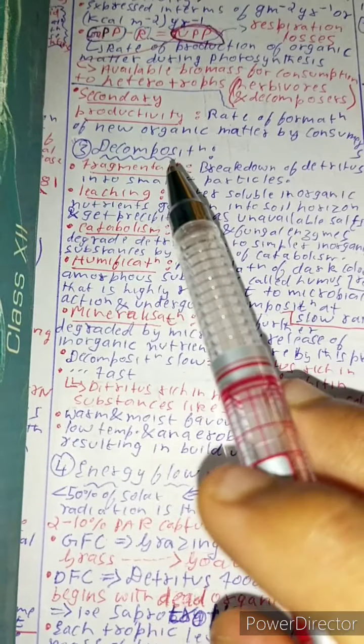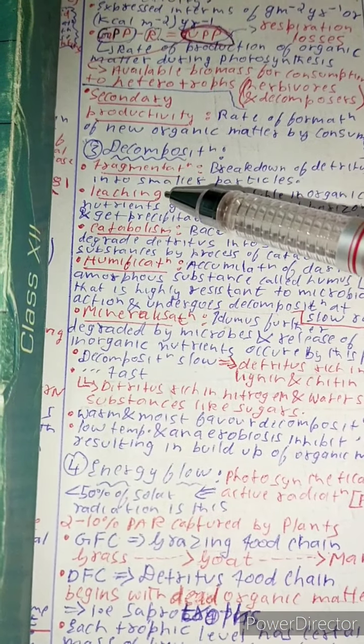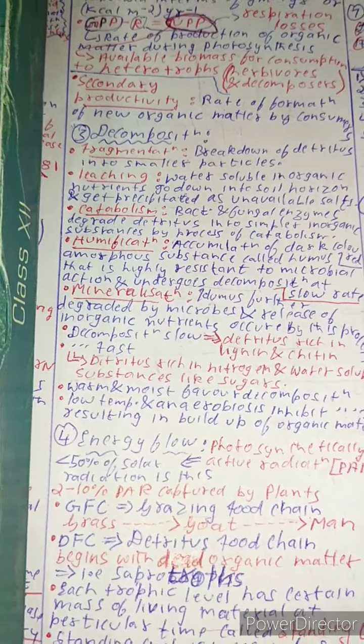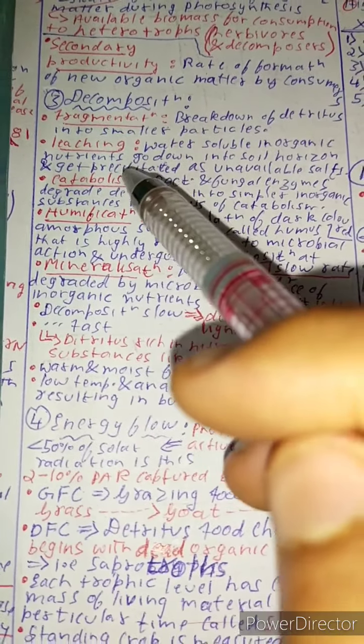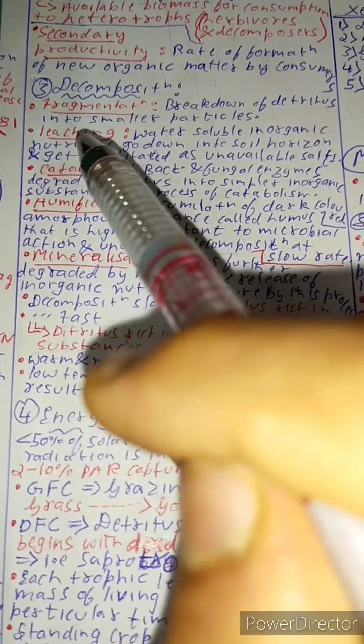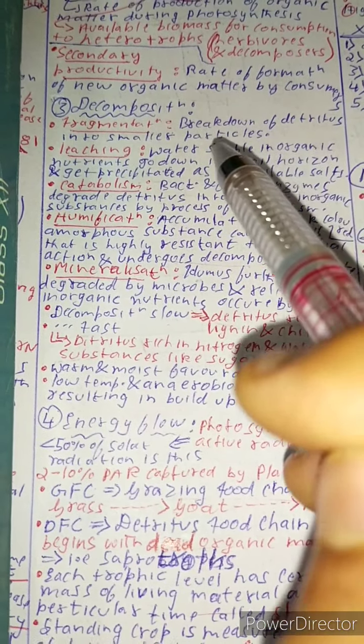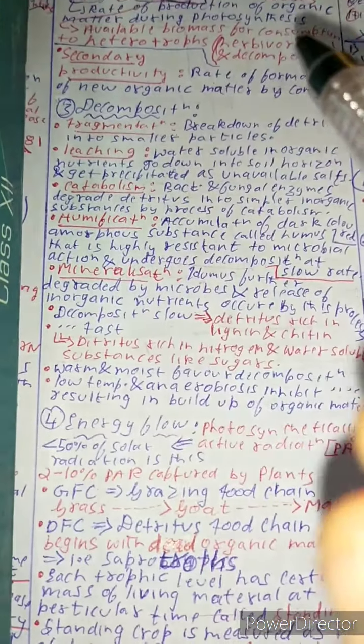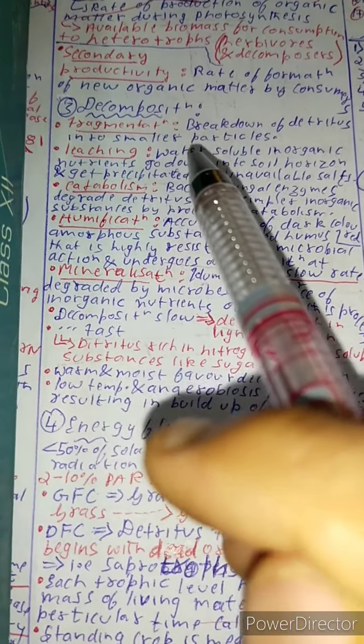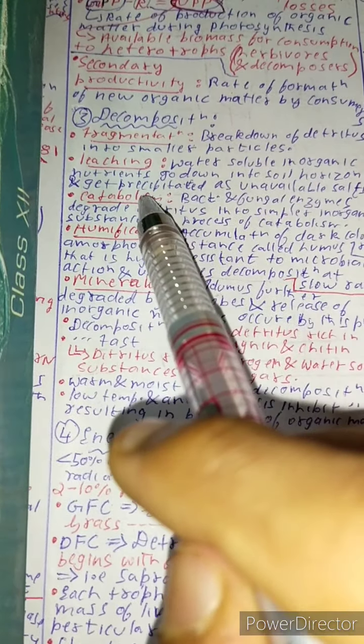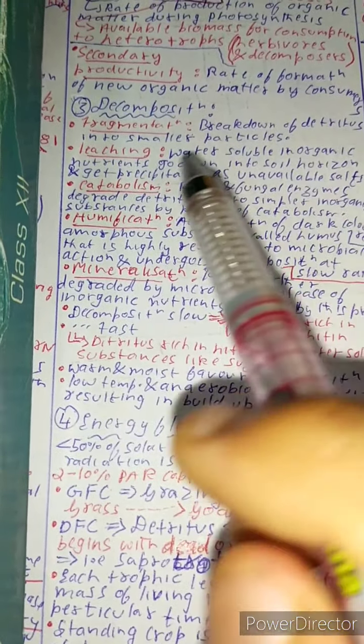The third topic which we are going to discuss is decomposition. Decomposition is broken down into following parts: fragmentation, leaching, catabolism, humification, and mineralization. Fragmentation is the breakdown of detritus into smaller particles. Leaching is the process by which water soluble inorganic nutrients go down into the soil horizon and get precipitated as unavailable salts.